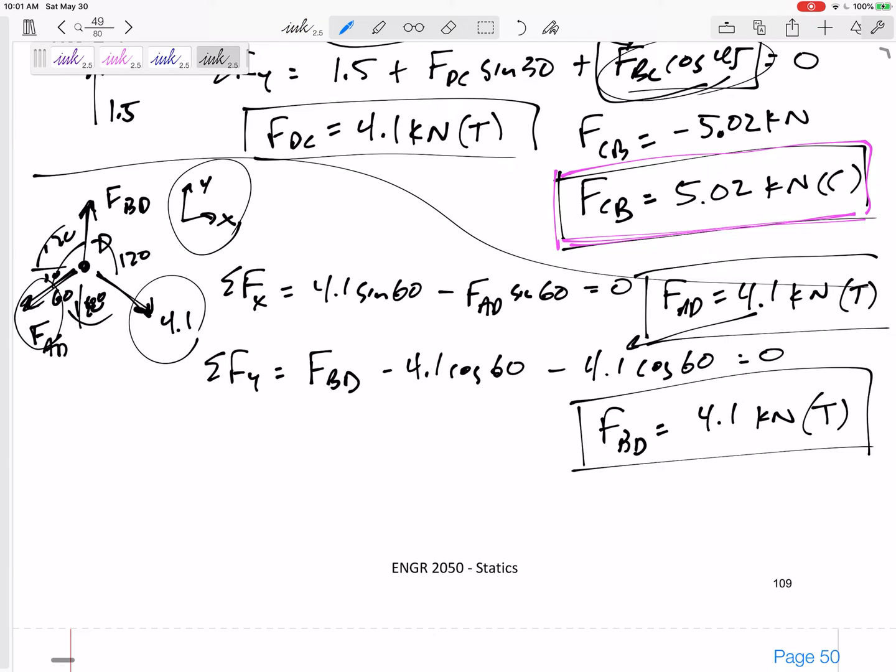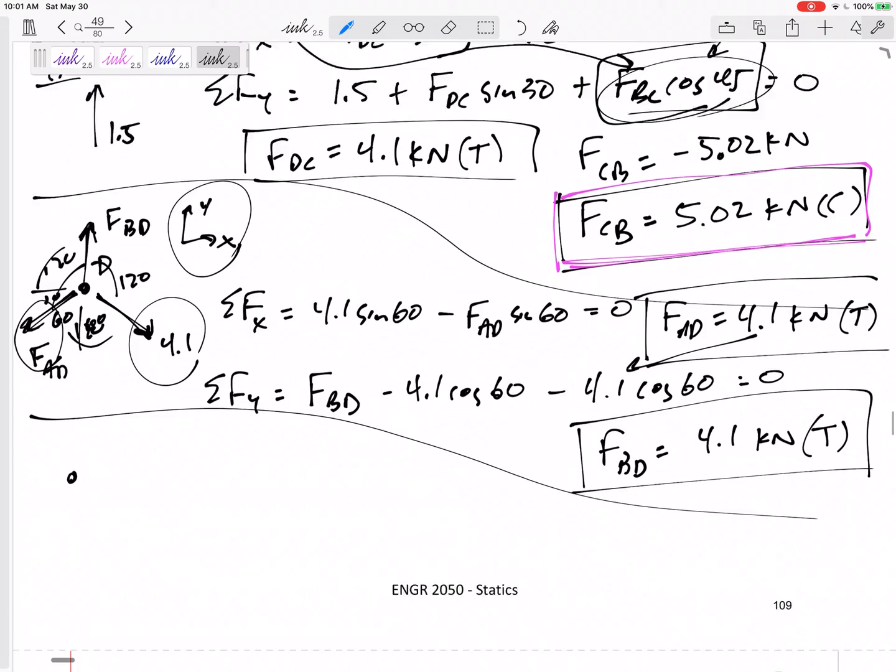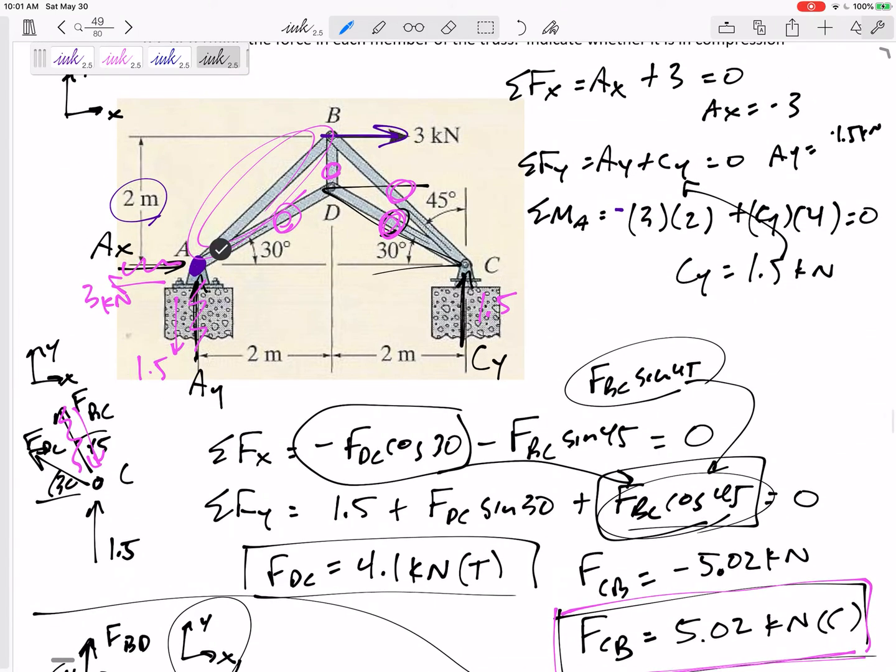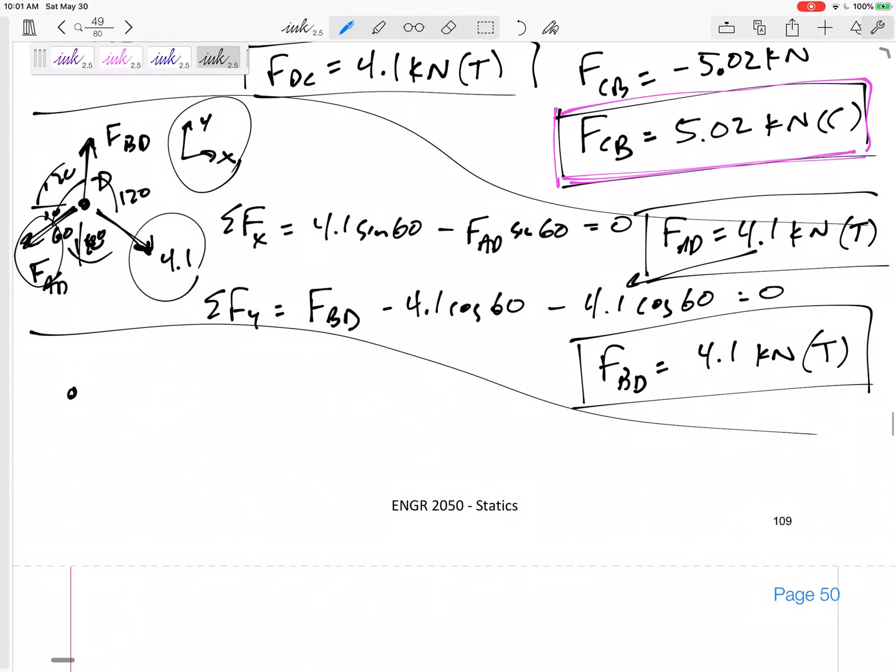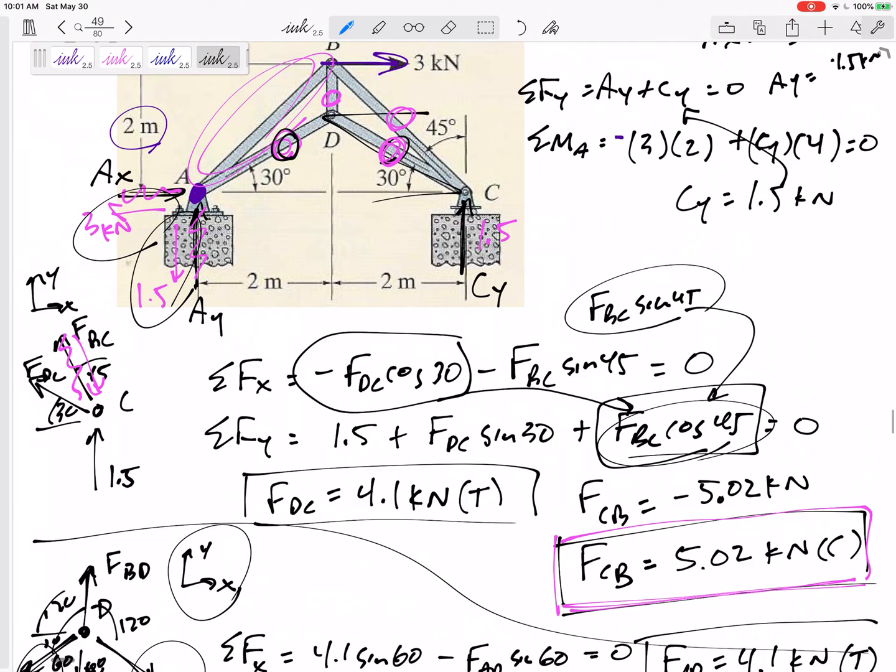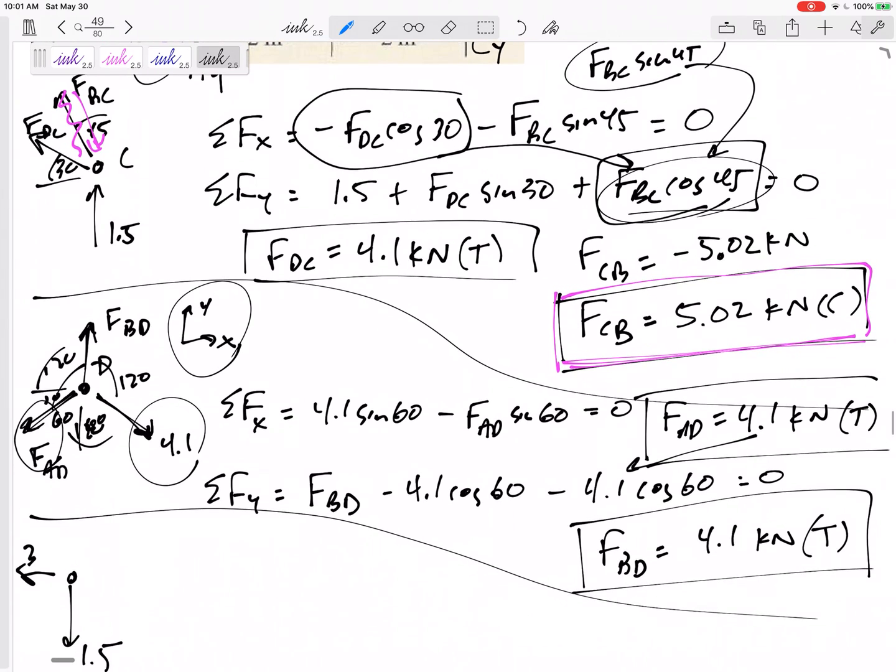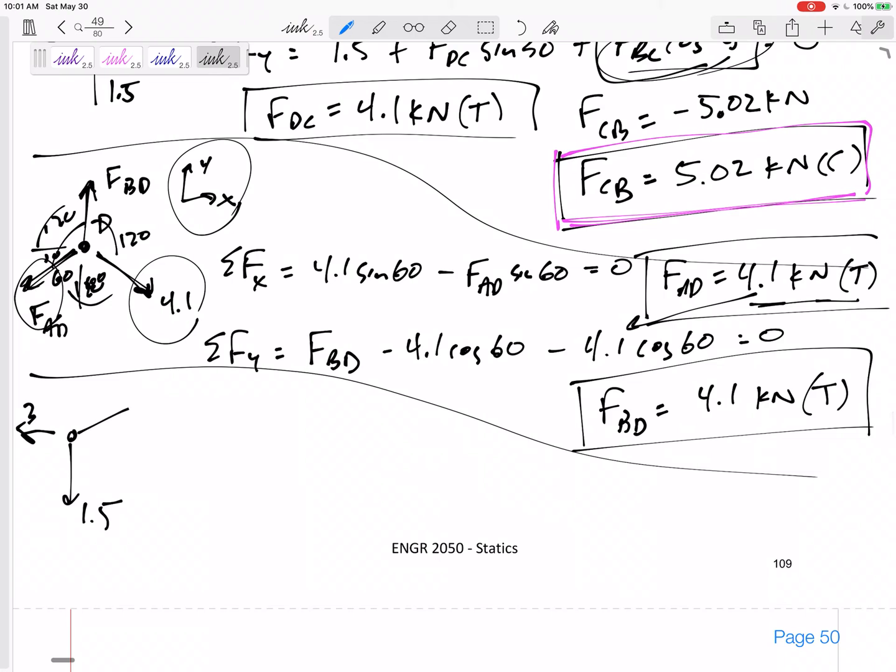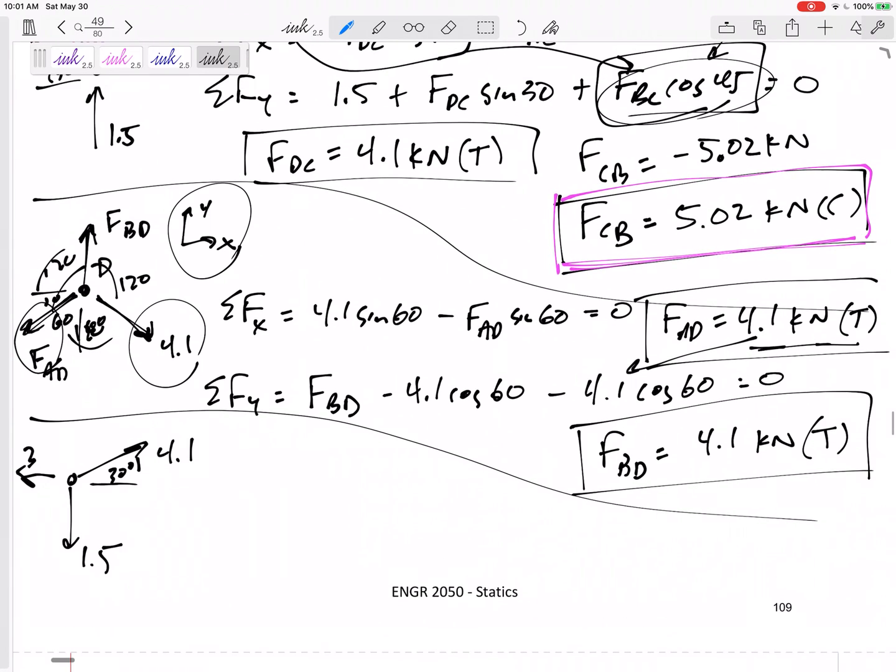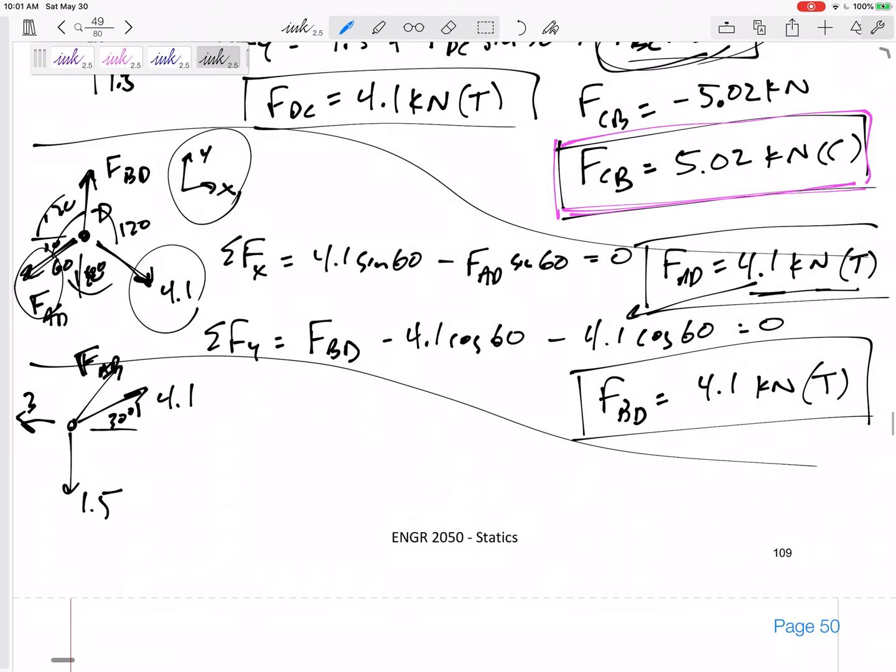I'm going to joint A. Let's see if I can fit this in here. What did I have at joint A? I had 1.5 down and 3 to the left. Then inside the member, we had already solved for this AD. It was 4.1 tension at a 30 degree angle right there. And then I don't know and I'm trying to solve for the force in member AB.